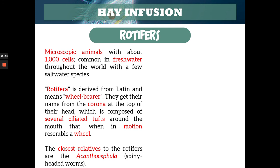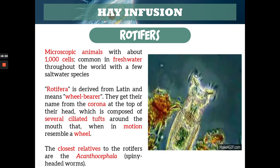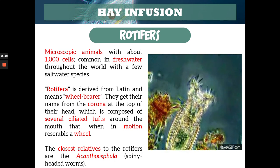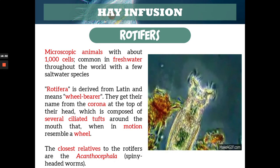The closest relatives to the rotifers are the acanthocephala, which is actually pathogenic. It's a type of nematode — they look like they have thorns, which is why they're called thorny-headed worms. Acanthocephalans can cause disease to humans — you'll have that in your lecture. So they are close relatives with the rotifers. Here's a picture of the rotifers — you can see the ciliated tufts that look like a wheel in motion, which is why it's called wheel bearer.